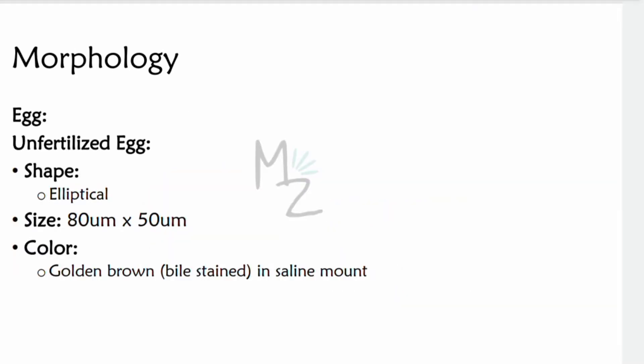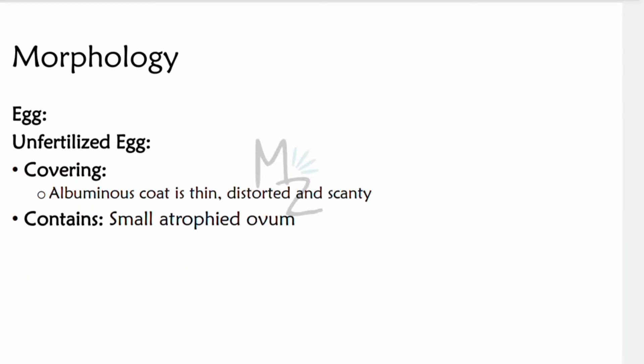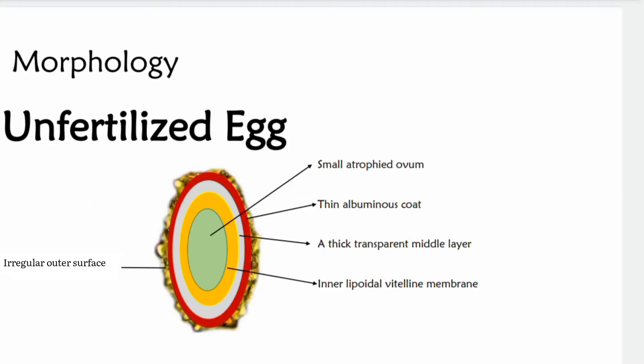Now let's talk about the unfertilized egg. It is elliptical in shape with a size of 80 micrometers by 50 micrometers. It is golden brown because it is bile-stained and appears golden brown in saline mount. Coverings are similar to those of the fertilized egg, but the albuminous coat is thin, distorted, and scanty. It also contains an ovum, but that is small and atrophied. You can see the small atrophied ovum, the thin albuminous coat, the thick transparent middle layer, and the inner lipoidal vitelline membrane.